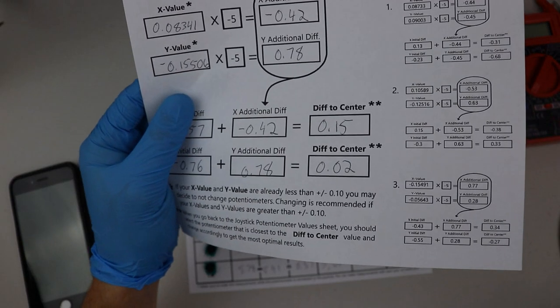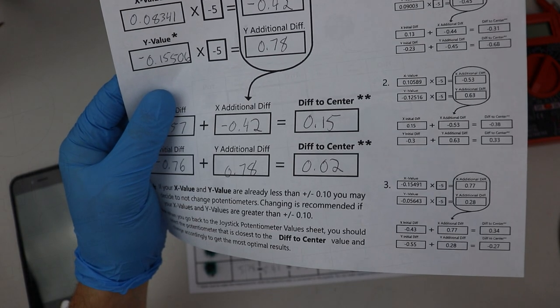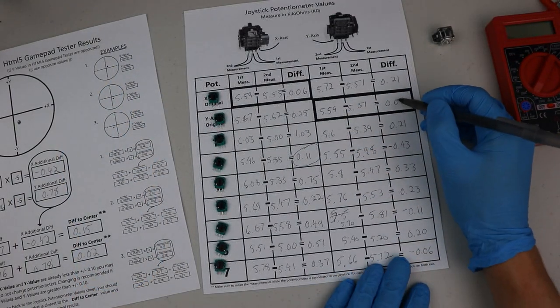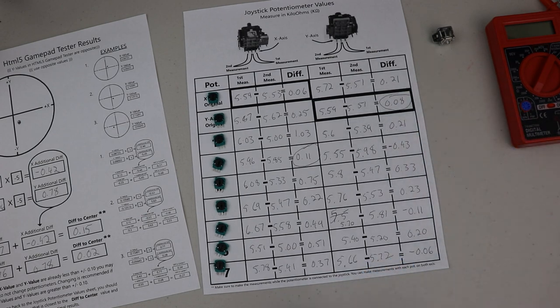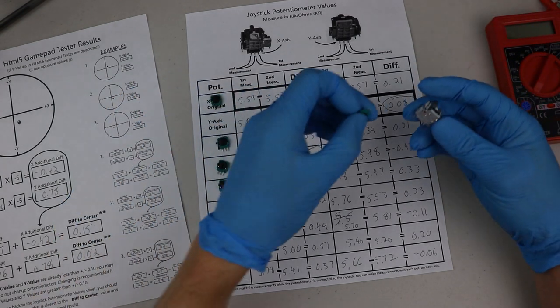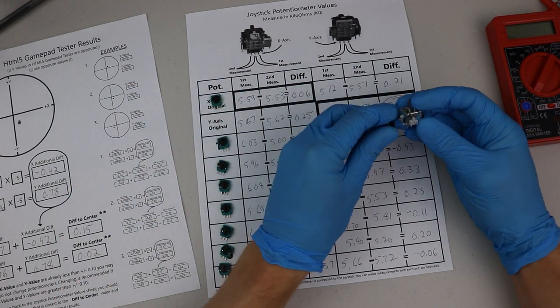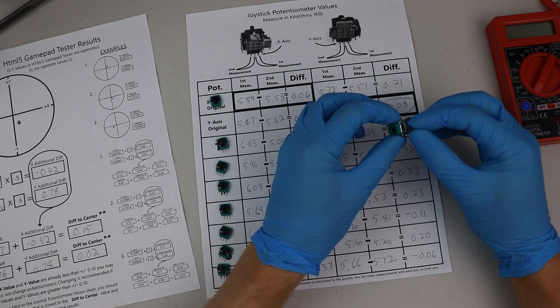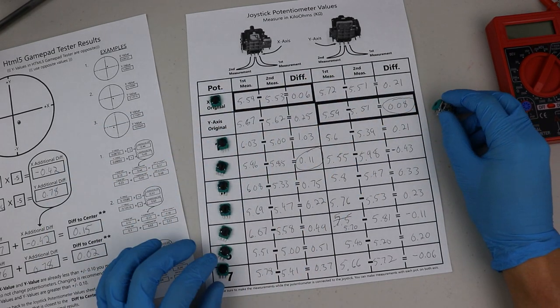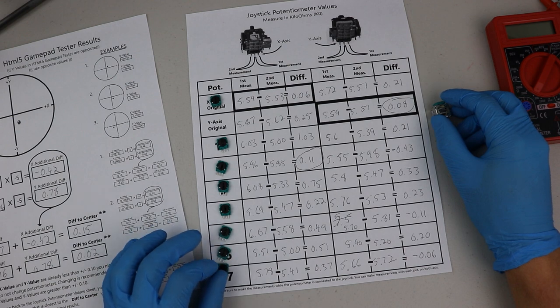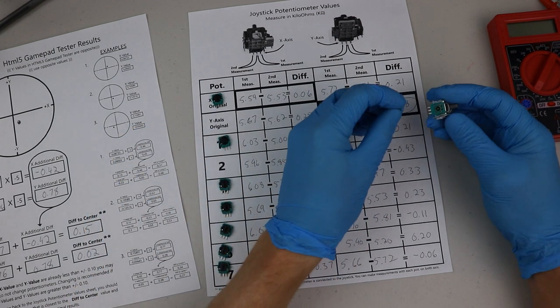Once I filled out the sheet, I went ahead and picked the two that were closest to the diff to center values and put them onto the joystick. It should be said that this procedure is not perfect because there are some small variables here and there when taking the readings. But for the most part, if you follow the instructions up to this point, it should work out pretty well.